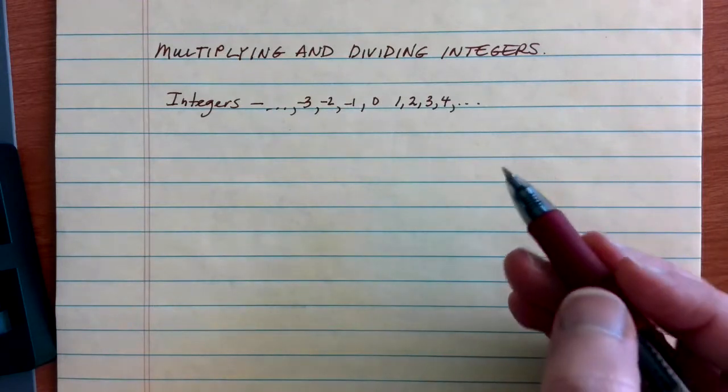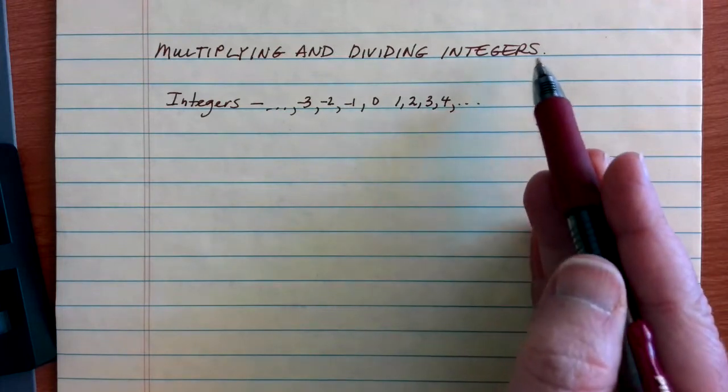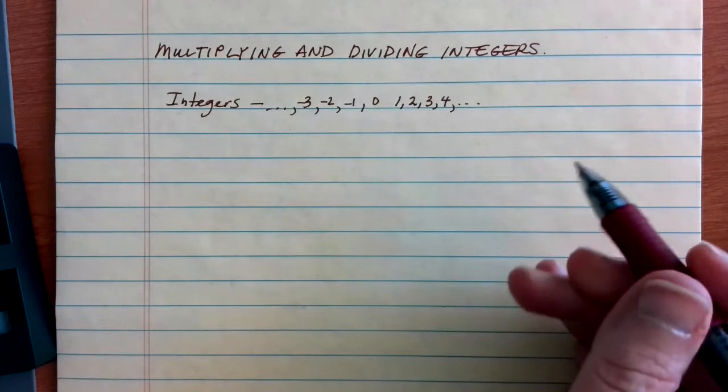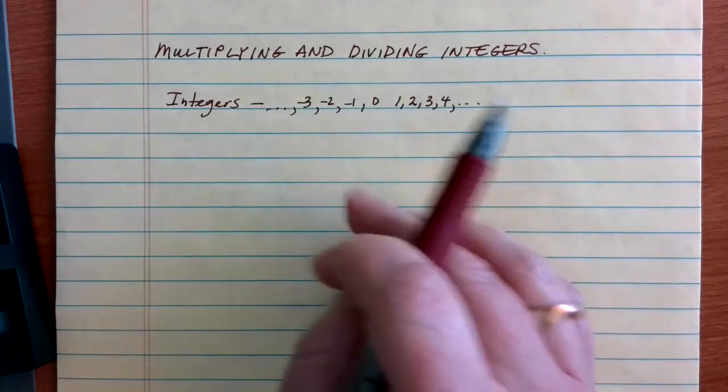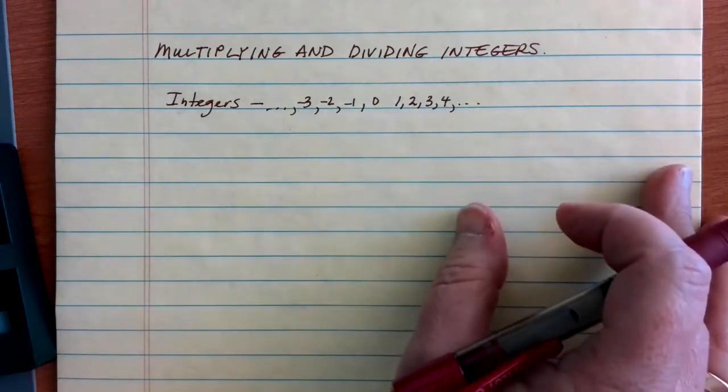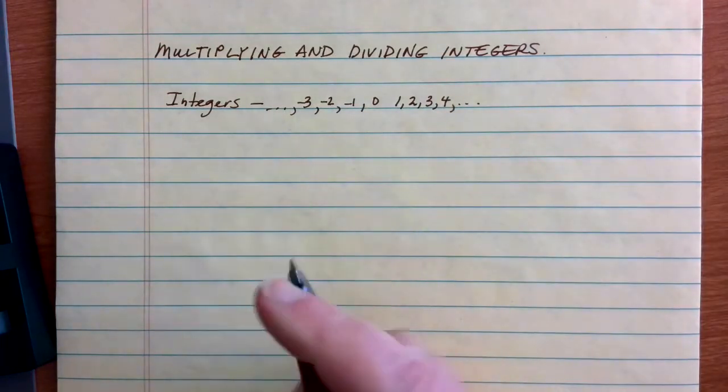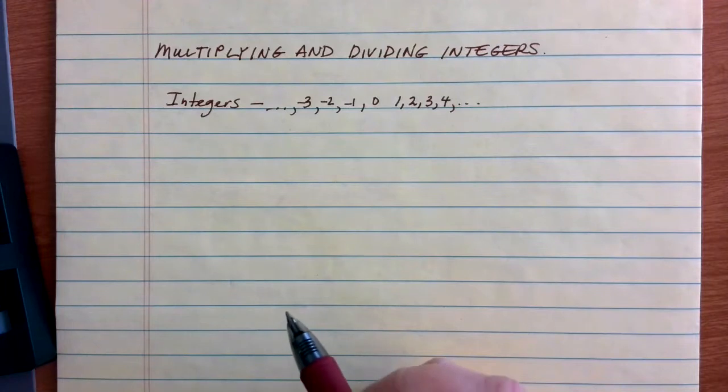When we're dealing with integer rules for how to multiply and divide with positive and negative numbers, similarly to fractions, we have a completely different set of rules for multiplying and dividing as we do for adding and subtracting. So, let's start with multiplying and dividing, which tends to be the easier one.